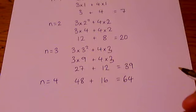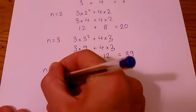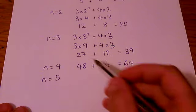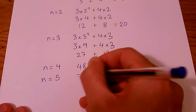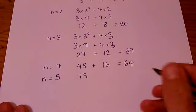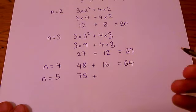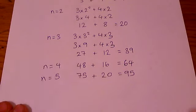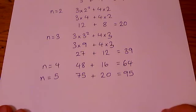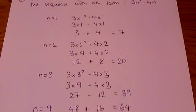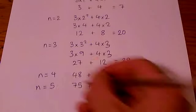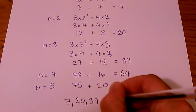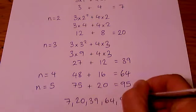And then when n equals 5, you can check that you would get this. You get 3 times 25, which is 75. And then you get 4 times 5, which is 20, which is 95. So the first 5 terms of the quadratic sequence will be 7, 20, 39, 64, 95.